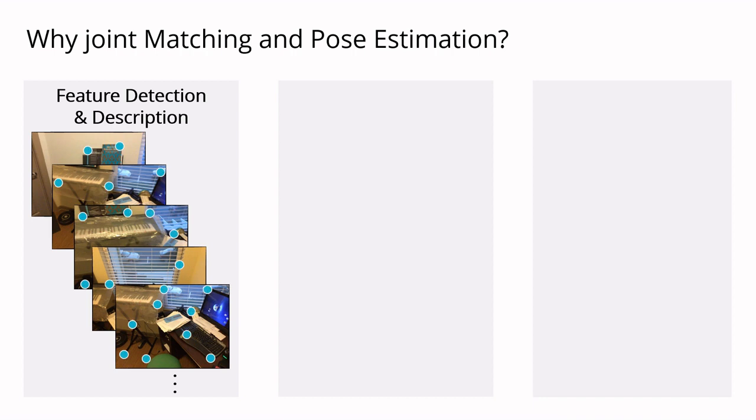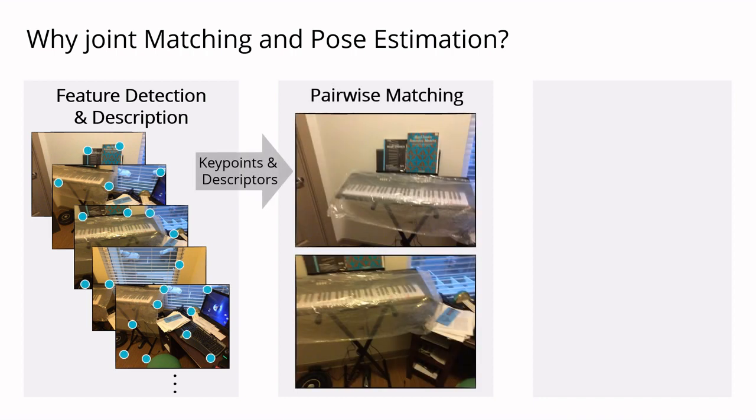First, local feature descriptors are computed. These descriptors are then matched across image pairs and the resulting correspondences serve as constraints for pose optimization.